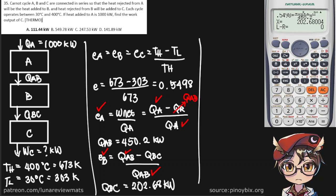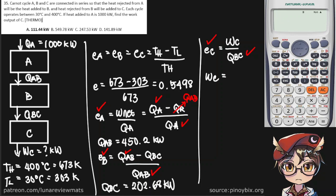Finally, we can find the work output of C using the efficiency equation: efficiency equals work output over heat input. We know E sub C is 0.5498 and QBC is 202.68 kilowatts. So work output equals 0.5498 times 202.68, giving us a final answer of 111.4 kilowatts.